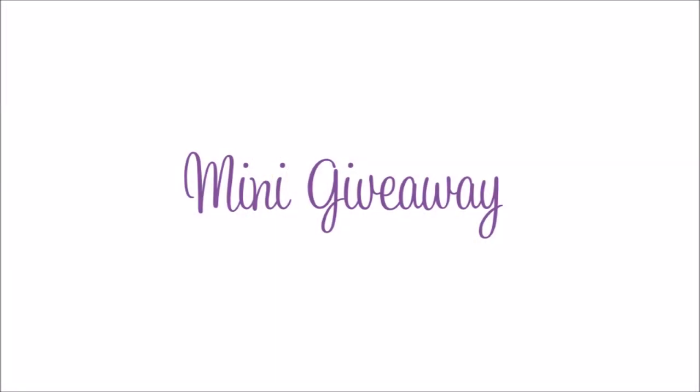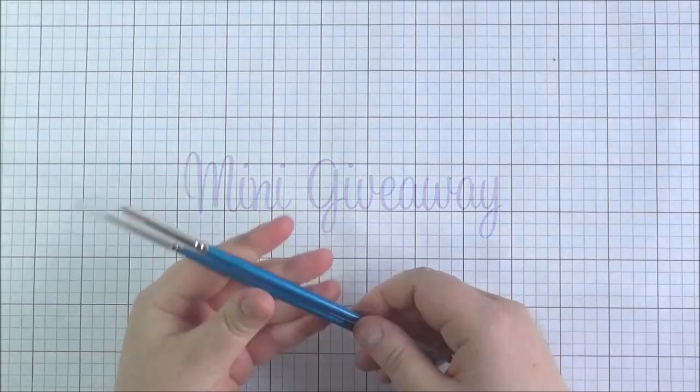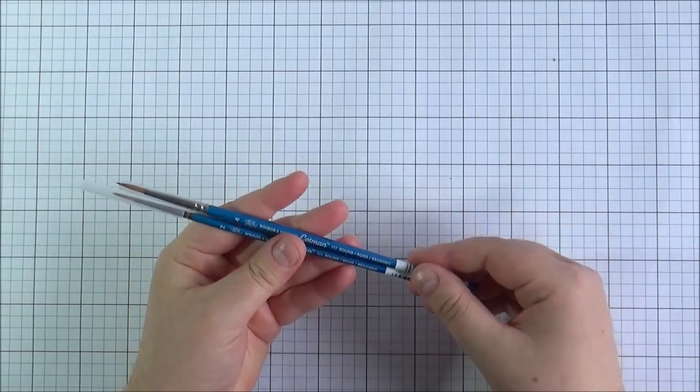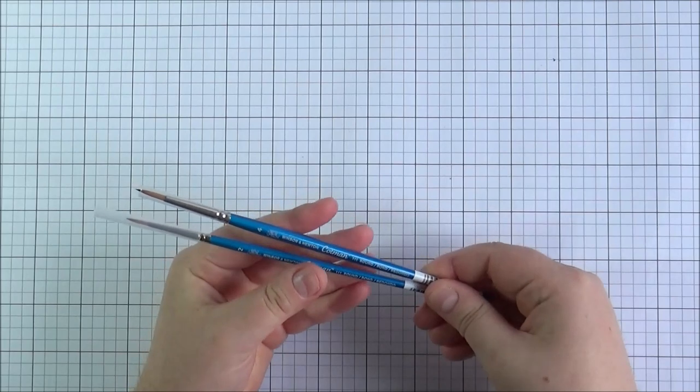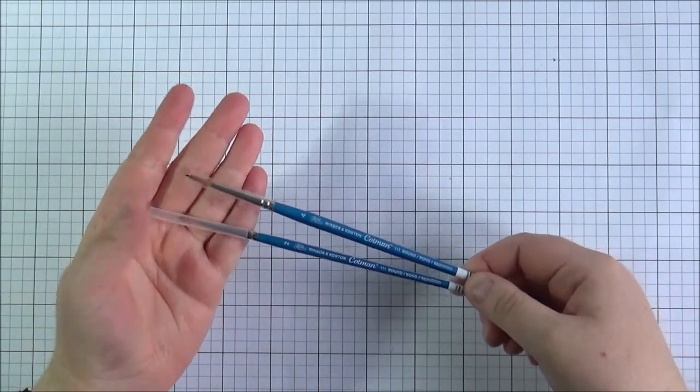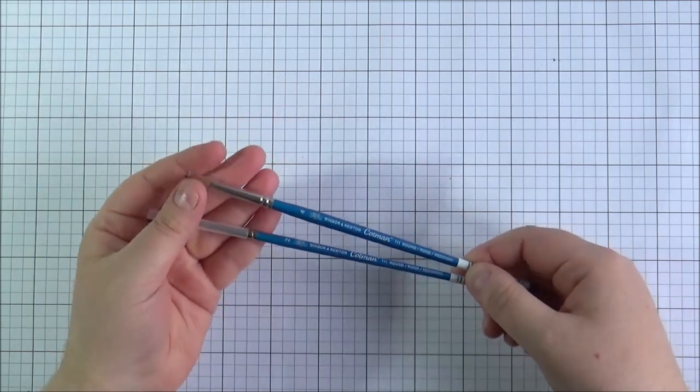I do have a mini giveaway to share with you today today the prize is two Winsor & Newton Cotman brushes these are in size 4 and size 2 and I really like these smaller sizes for colouring especially like floral images and any stamped images I just quite like the smaller size.